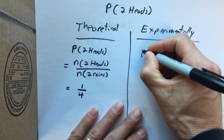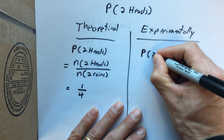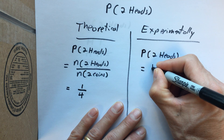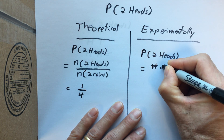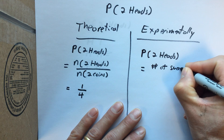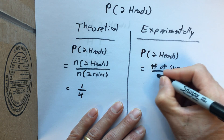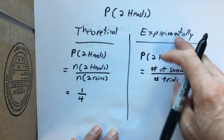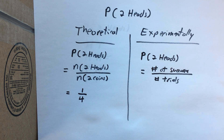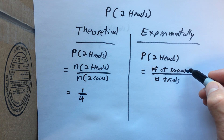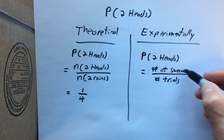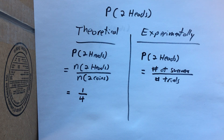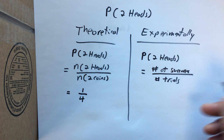Experimentally, the probability of two heads equals the number of successes divided by the number of trials. You have to actually do an experiment. I'm going to flip two coins, keep track of the number of times I get two heads as a success, and divide by the number of trials. I'll set up a tally chart with columns for trials and successes, where success means two heads.